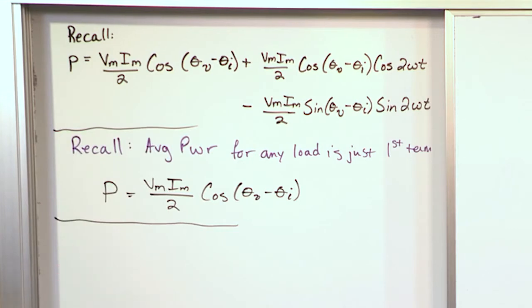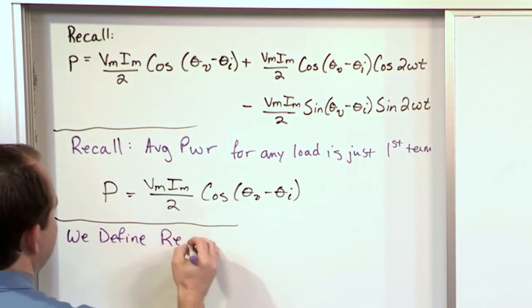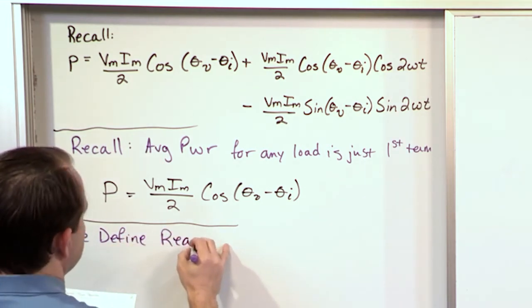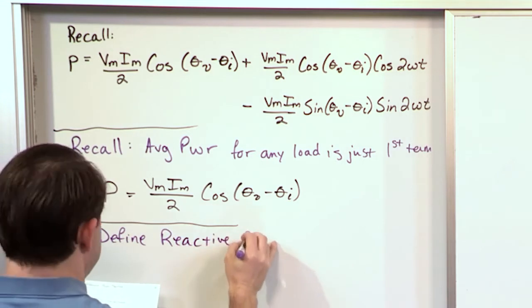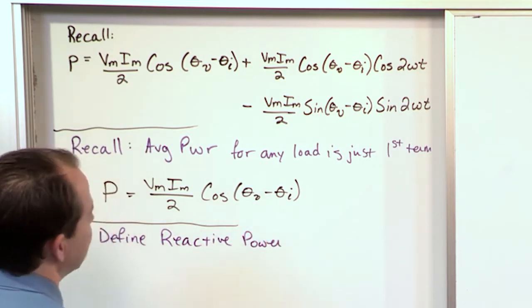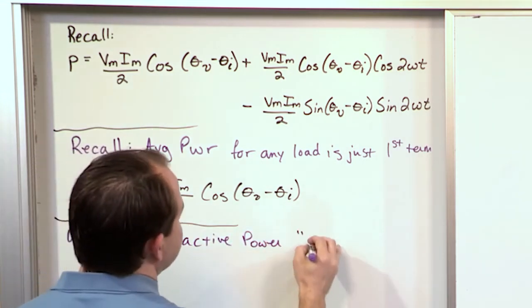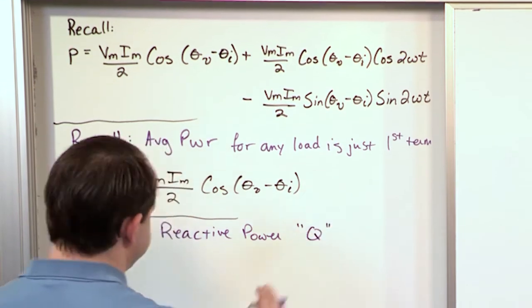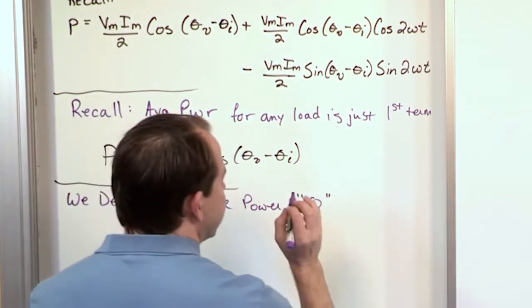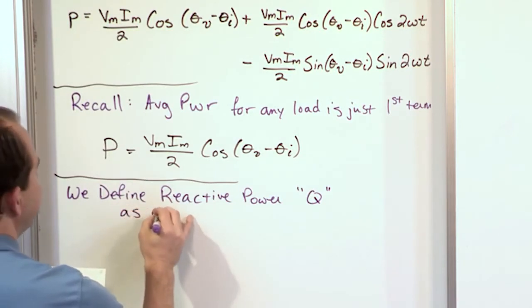Now we want to define something to make things a little bit easier. We're going to define the reactive power, which we've talked about, but now we're going to label it with a variable. We're going to call it Q, and we're going to define it as the coefficient of the third term.